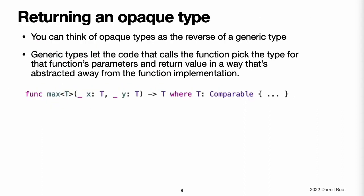Returning an Opaque Type. You can think of an opaque type like being the reverse of a generic type. Generic types let the code that calls a function pick the type for that function's parameters and return value in a way that is abstracted away from the function implementation.